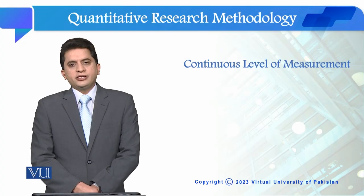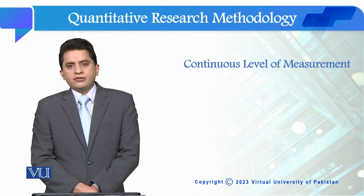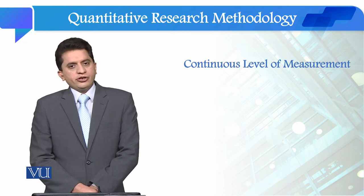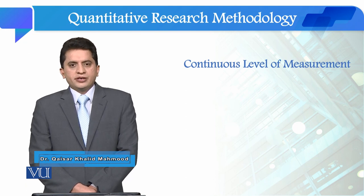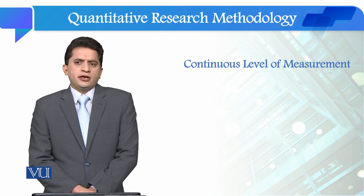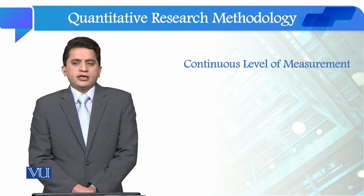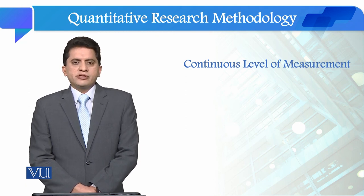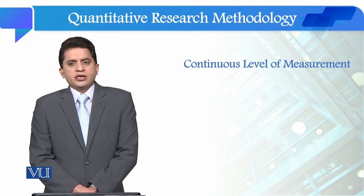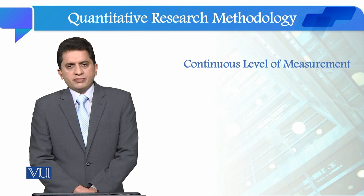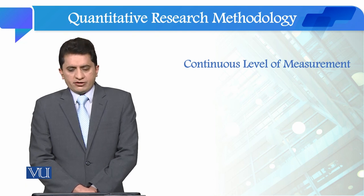Students, we are going to study the last or optimum level of measurement which is called continuous level of measurement. In social science research, when we conduct quantitative research, we prefer to measure as many variables as possible at this level. The reason is that when you perform statistical analysis, you have more opportunities and more chances to perform a good statistical analysis with the help of a continuous level of measurement.